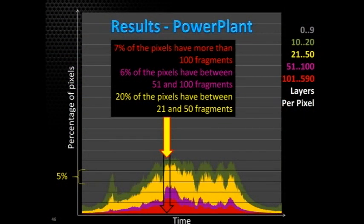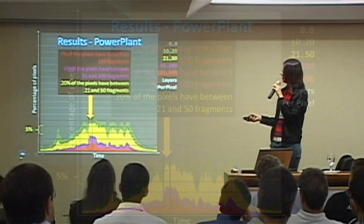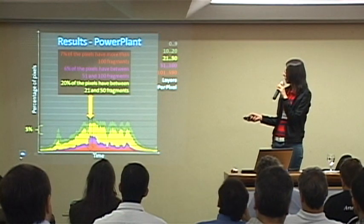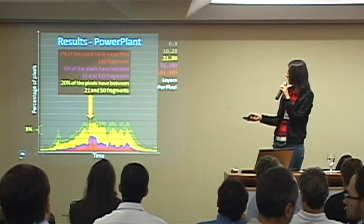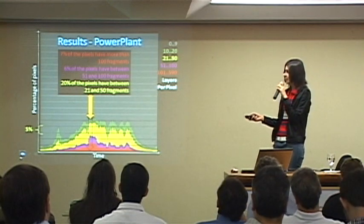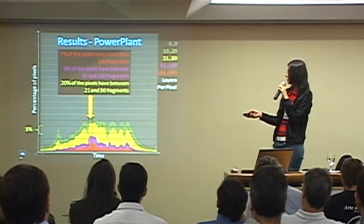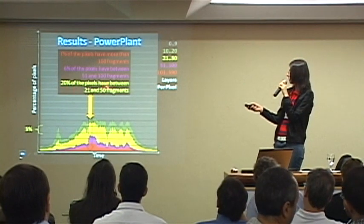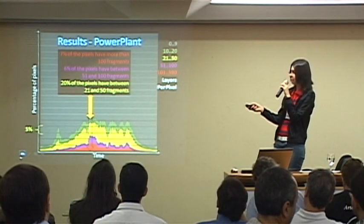In one example we have around 7% of pixels with more than 100 fragments, 6% with between 51 and 100 fragments, and 20% with between 21 and 50 fragments.